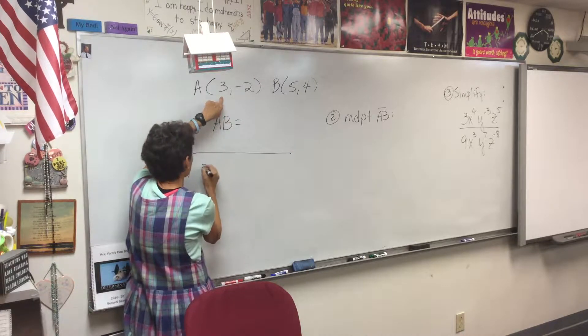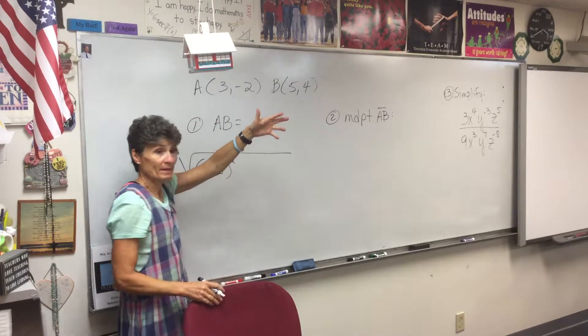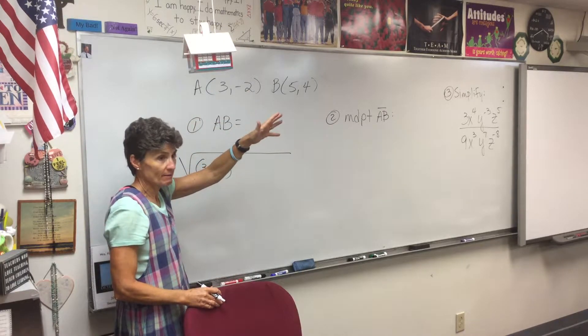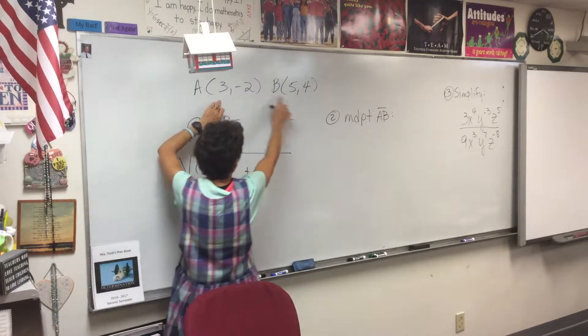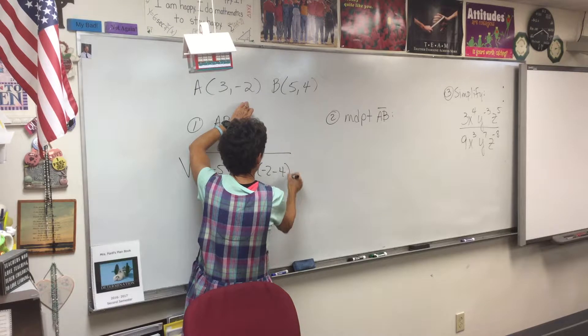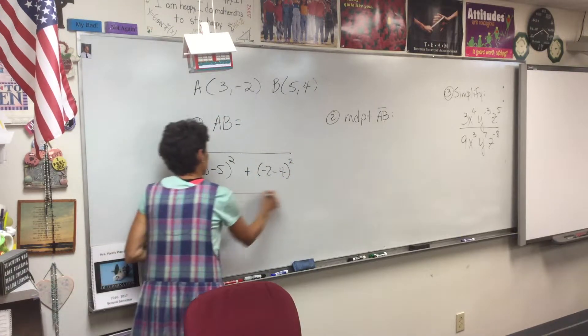Subtract our x's. Whoever said that, said three minus five. Could we do five minus three? It's got a single bit of difference either way, whatever you are comfortable doing. We've got x minus x, and now we're going to take y minus y, and again you can do that in either order.